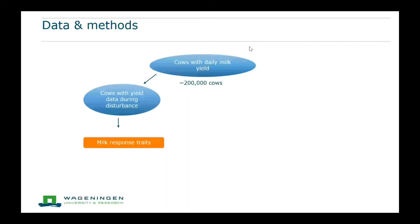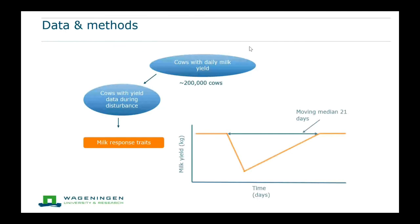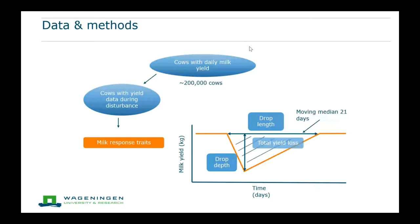We then calculated milk response traits for individual cows showing how they responded to the disturbance. We fitted a moving median of 21 days for each individual cow to set a baseline. The first trait was drop length — the difference in days between when the cow dropped below the baseline and when it reached the baseline again. Drop depth is the absolute difference between the lowest milk yield and the milk yield on the day before the drop. Total yield loss is the absolute sum of all deviations during the drop.